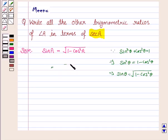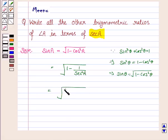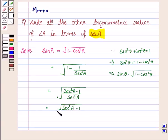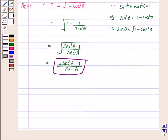Now, cos A can be written as 1 upon secant A, so cos squared A is 1 upon secant squared A. Taking LCM, we have secant squared A minus 1 upon secant squared A. So sine A equals the square root of secant squared A minus 1, all upon secant A.